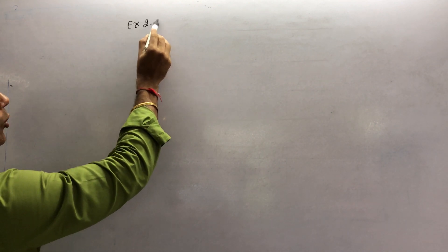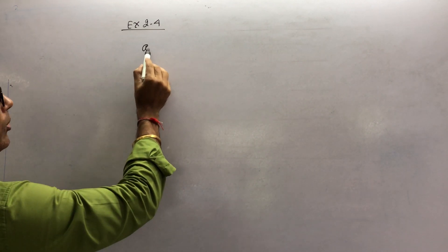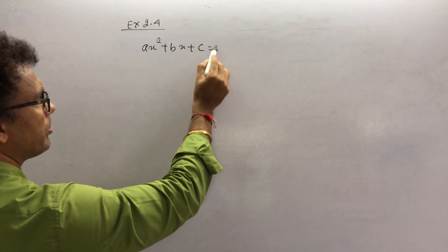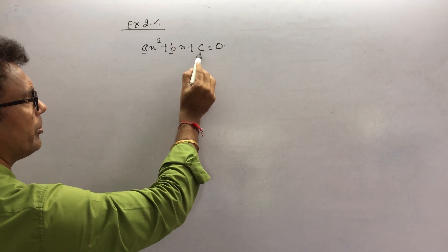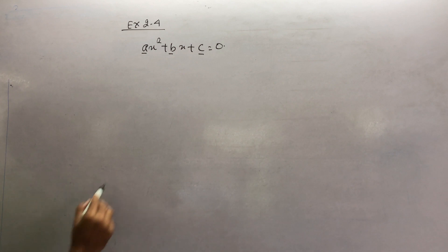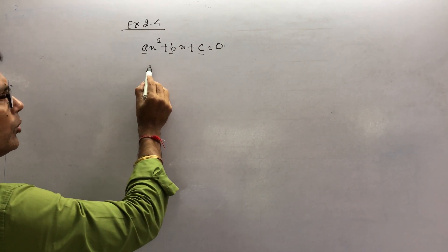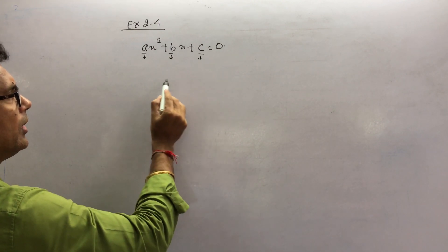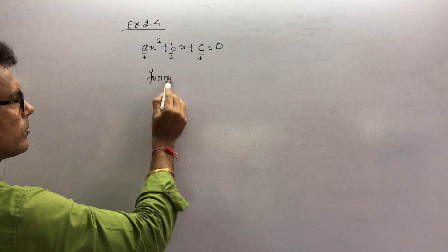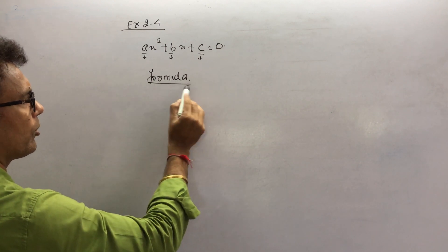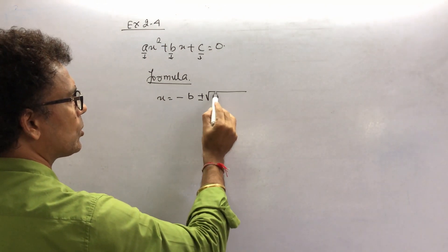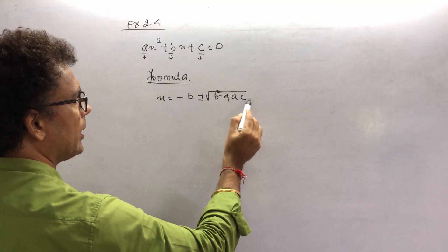In Exercise 2.4, the standard form of a quadratic equation is ax² + bx + c = 0. Here, a, b, and c are the respective values. The formula we use in 2.4 is the quadratic formula.